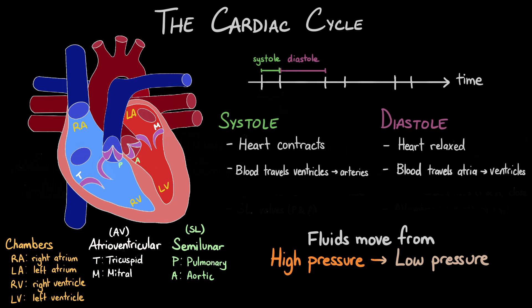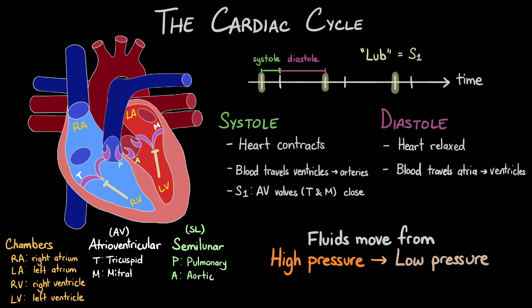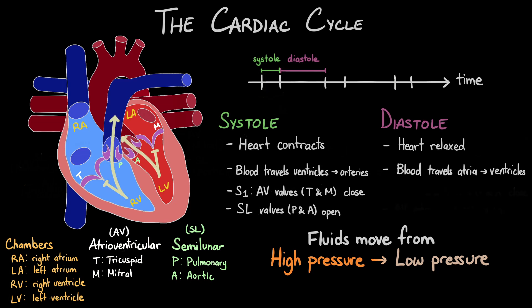During systole, when the ventricles contract to expel blood, pressure is higher in the ventricles than it is in the atria. Blood will want to move backwards into the atria where there is less pressure. But notice that the flaps of the valves are shaped like crescents — some blood will get caught behind the flaps of the atrioventricular valves and force the valves to shut. When the atrioventricular valves shut — the tricuspid and the mitral valves — they create the lub sound, also called S1. The high pressure in the ventricles will instead push the semilunar valves open, directing blood into the arteries.